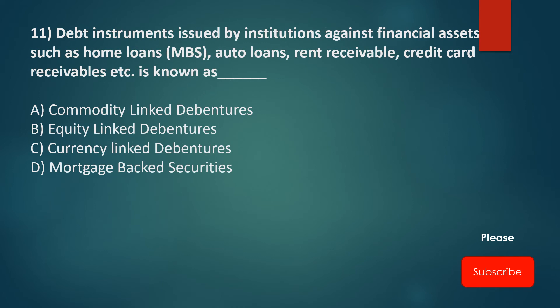Debt instruments issued by financial institutions against financial assets such as home loans, auto loans, rent receivables, credit card receivables, etc. is known as — Option A: Commodity-linked debentures, Option B: Equity-linked debentures, Option C: Currency-linked debentures, Option D: Mortgage-backed securities. The correct answer is Option D: Mortgage-backed securities.